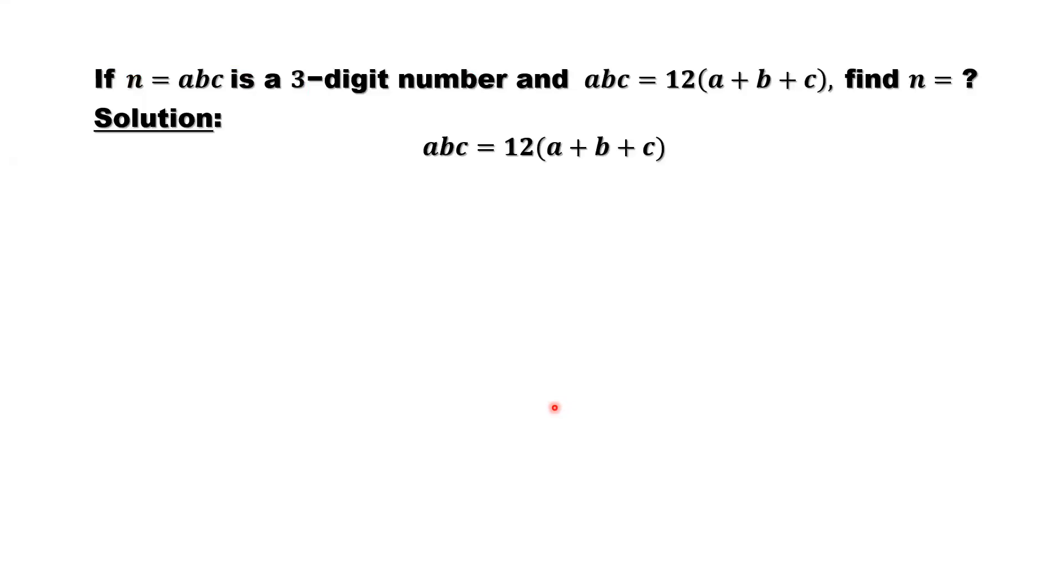This is the given condition: abc equals 12 times a plus b plus c. The question is we need to find n. It is equivalent to find each digit a, b, and c. Look at the left-hand side, abc. A is in the 100th position, b is in the 10th position, c is in the 1st position.